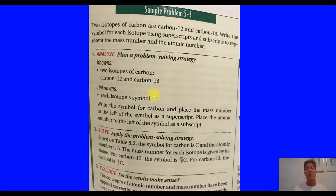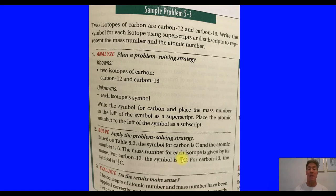Sample problem: two isotopes of carbon are carbon 12 and carbon 13. Write the symbol for each isotope using superscripts and subscripts to represent the mass number and the atomic number. Carbon 12 is written with the symbol C, atomic number 6 as a subscript, and mass number 12 as a superscript. Carbon 13 is written the same way — atomic number 6, mass number 13.